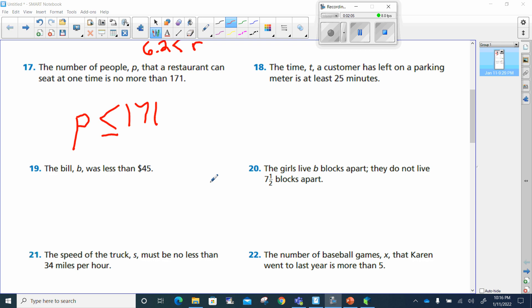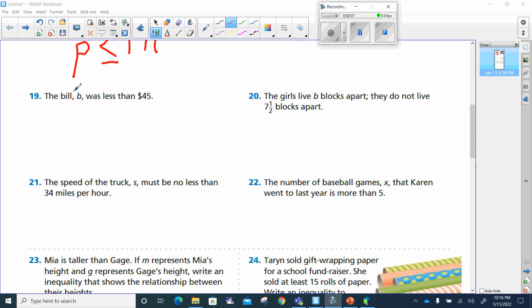All right, now we're headed to number 19. The bill b was less than $45. So b is going to be less than, not equal to, but less than 45.